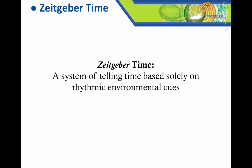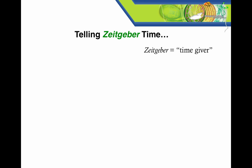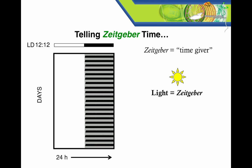Now let's discuss Zeitgeber time. Zeitgeber time is a system of telling time based solely on rhythmic environmental cues, such as light-dark cycles. Zeitgeber is a German word that means time giver. Light is the primary Zeitgeber for the circadian system, though there are others. So, if there's a repeated and rhythmic Zeitgeber, such as a light-dark cycle, use Zeitgeber time.